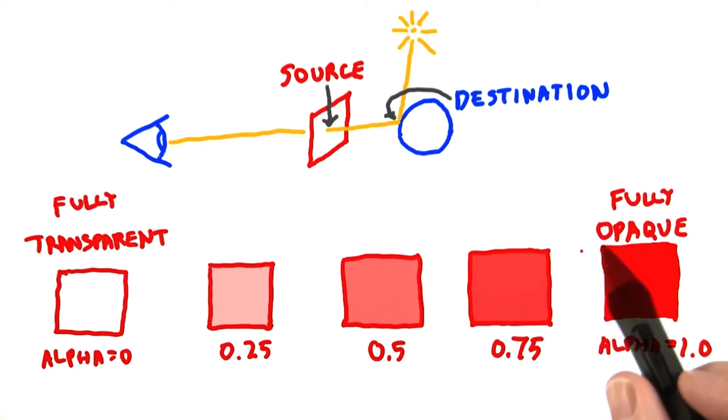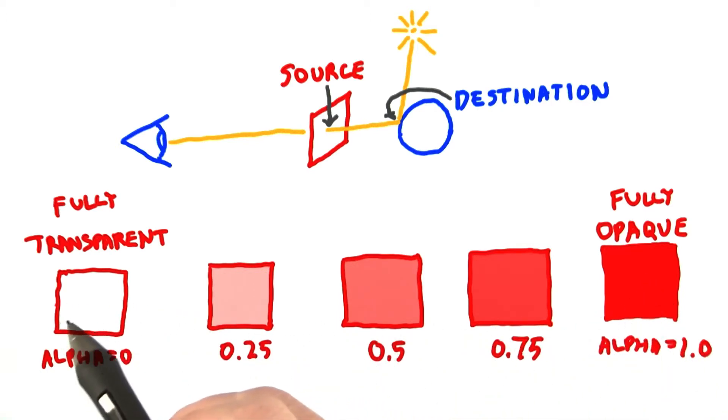When alpha is 1, the filter is fully opaque and does not let any light through. As this value decreases, more of the destination color becomes visible. Here, I'm just showing how the red is affected.